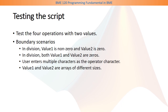The other case in division is that both value one and value two are zeros, and they will be zero divided by zero. The third scenario is the user enters more than one character for the operator character, so this is not accepted. What are you going to do with it?